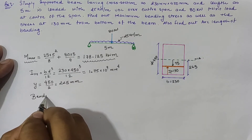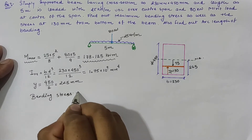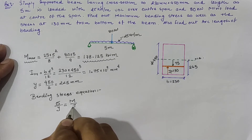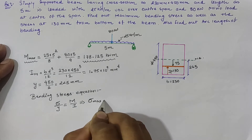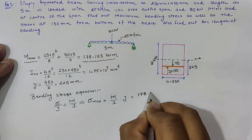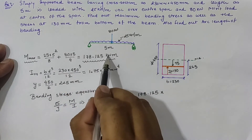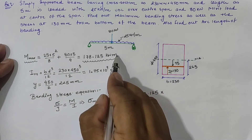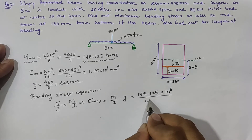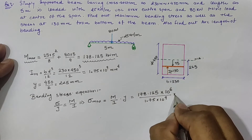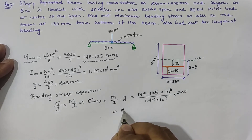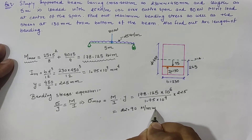Using the bending stress equation σ/y = M/I, the maximum bending stress at the top and bottom fibers is σ_max = M/I × y. Substituting M equal to 178.125 × 10⁶ N·mm, I equal to 1.75 × 10⁹ mm⁴, and y equal to 225 mm, we get σ_max equal to 22.90 N/mm².